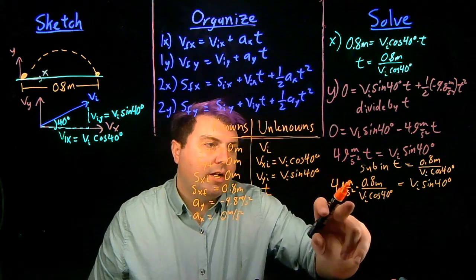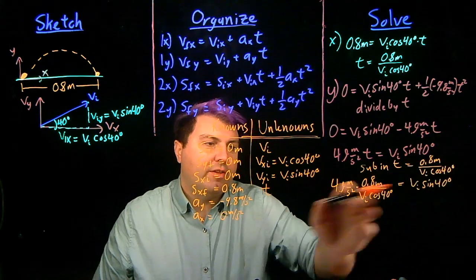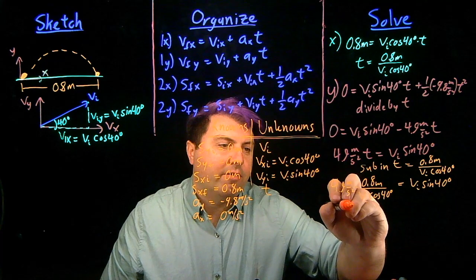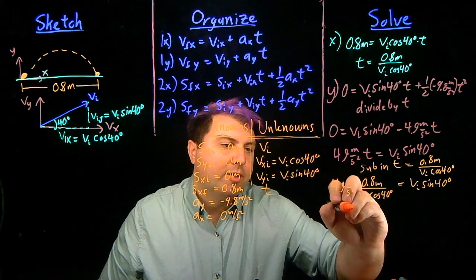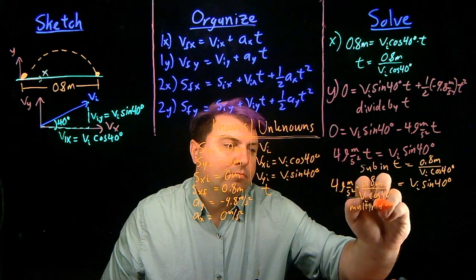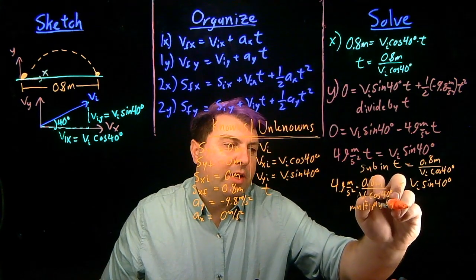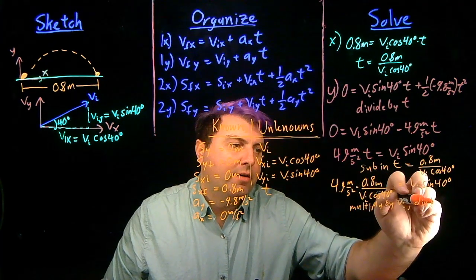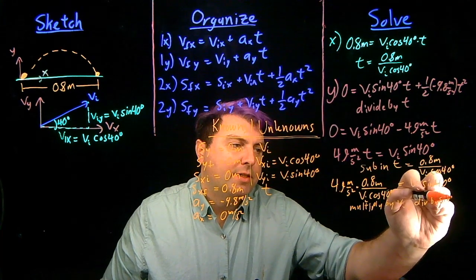So what we can do is get all of these vi's to one end, and everything that's not vi to the other end. We're essentially multiplying by vi, and then we're dividing by sine of 40 degrees.